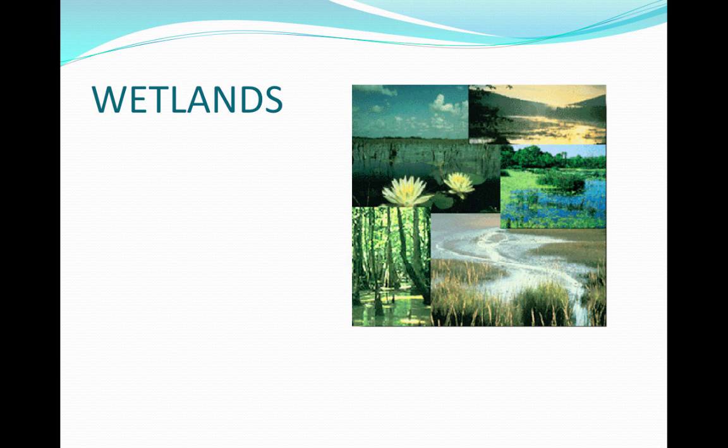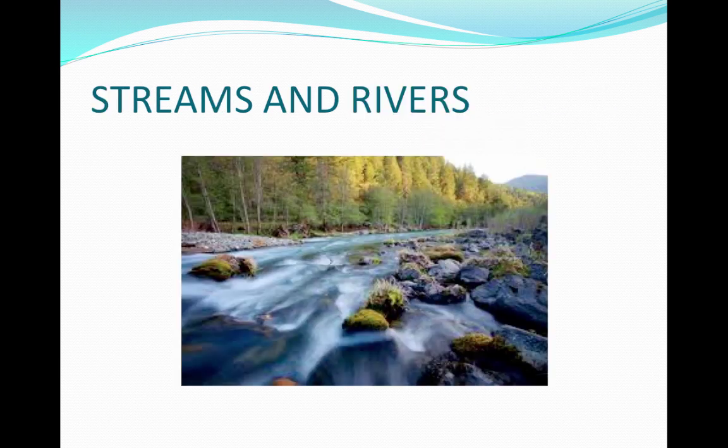Wetlands are inundated with water; the water saturates the soil and they have a lot of organic matter but not much oxygen. They are extremely productive biomes, but we tend to drain and fill them to build on them. Streams and rivers contain moving water with currents. Headwaters at the beginning are cool, swift, low in salt and nutrients, but high in oxygen. At the mouth, there are high levels of salt and nutrients. Humans pollute streams and rivers and dam them for flood control, disrupting ecosystems.